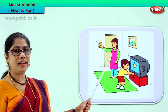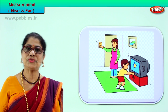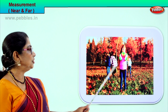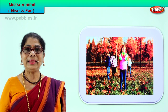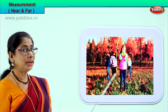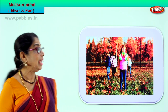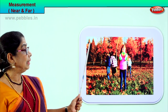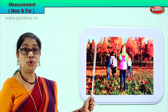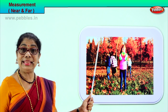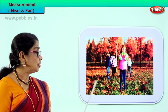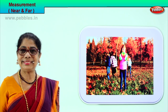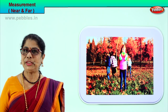Let's take another picture and understand what is near and far. Here children are playing in a garden - they are trying to play hide and seek. Can you see the trees far away? You have lots of lovely trees far away. The trees are far and the children are here near.